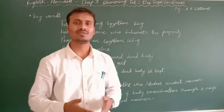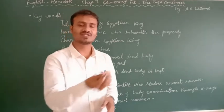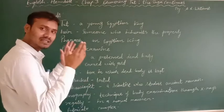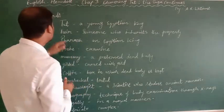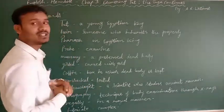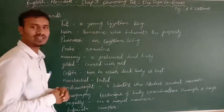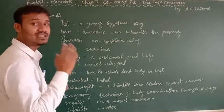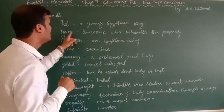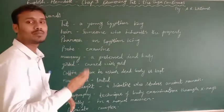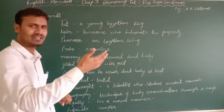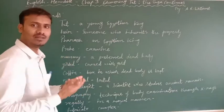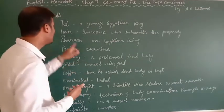Before we proceed with the chapter summarization, let's cover some keywords I have specifically selected. First: Tut — a young Egyptian king. Heir — the pronunciation is 'air.' Heir means someone who inherits the property of the same dynasty or another; one who inherits is known as an heir. Pharaoh — what is pharaoh? An Egyptian king. The king of the Egyptian dynasty is known as pharaoh.